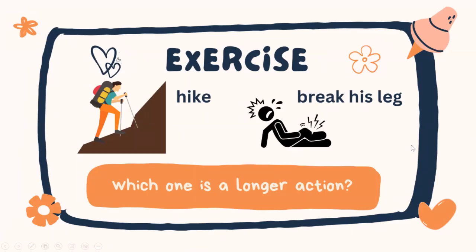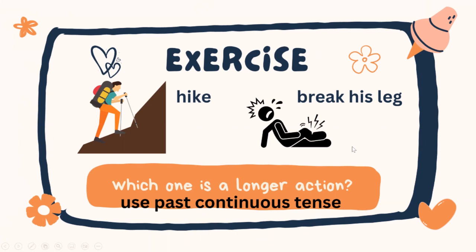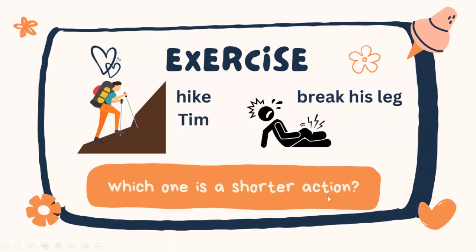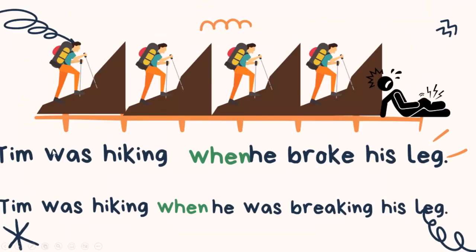Now let's have a look at this exercise. On the left-hand side we have a picture with the word 'hike,' and on the right-hand side we have a picture with the phrase 'break his leg.' Which one is the longer action — hiking or breaking his leg? For the longer action we use past continuous tense, and for the shorter action we use simple past tense. So here are two options: 'Tim was hiking when he broke his leg,' or 'Tim was hiking when he was breaking his leg.' The first one is the correct answer, because breaking his leg is a shorter action, so we have to use simple past tense.